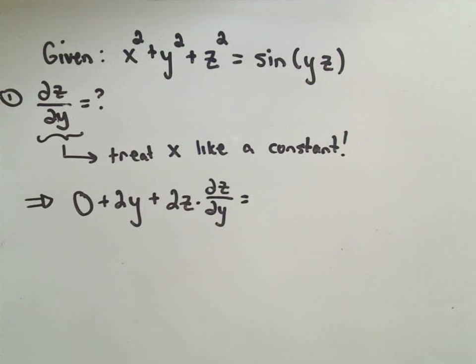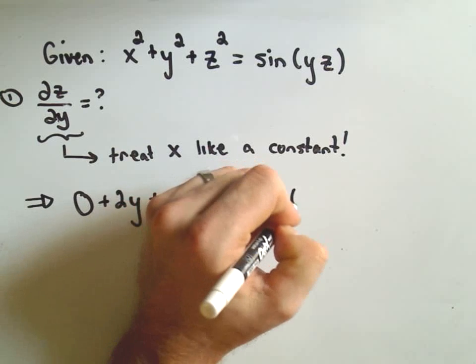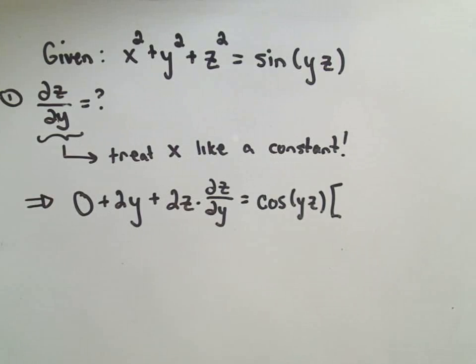Okay, so on the right side, same thing. We'll have to use the chain rule. So we'll get cosine of yz. Now we have to multiply by the derivative of the inside.